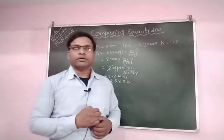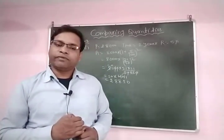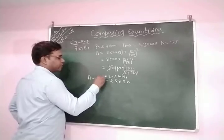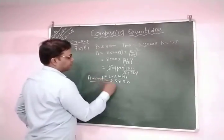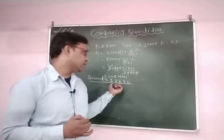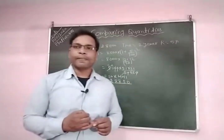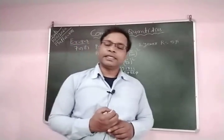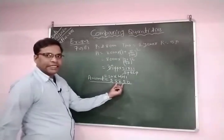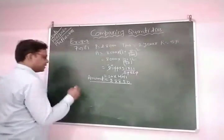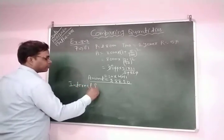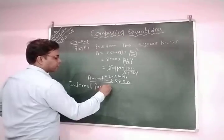So after the end of 2 years, her account will be credited Rs.8,820. Now we need to find interest for the 3rd year. For this, the amount Rs.8,820 is treated as the principal for the 3rd year. We find simple interest using the formula: Simple Interest = PRT by 100.